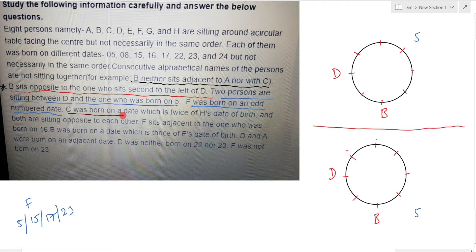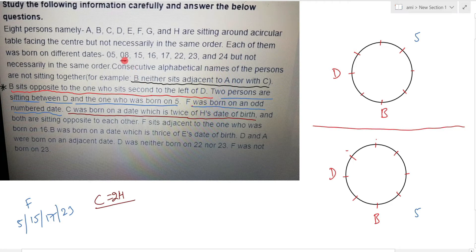Another clue: a person was born on a date which is twice H's date of birth. The possible pairs are 8 and 16. So the double date of birth gives us June 8 and 16th as the possible pair.